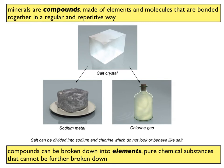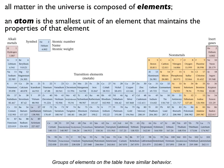Minerals are compounds — they're made of elements and molecules that are bonded together in regular and repetitive ways. We know this because minerals have to be crystalline and have to have definite chemical compositions. Remember: the earth is made of rocks, rocks are made of minerals, and minerals are basically compounds of elements. Elements are pure chemical substances that cannot be further broken down. Let's take a quick detour into the land of elemental chemistry.